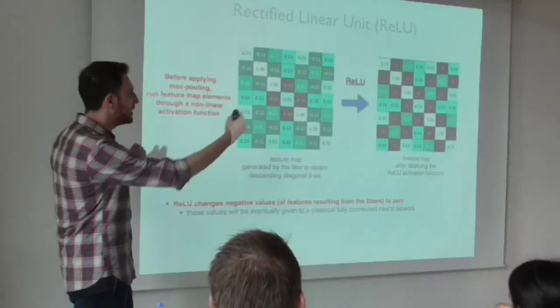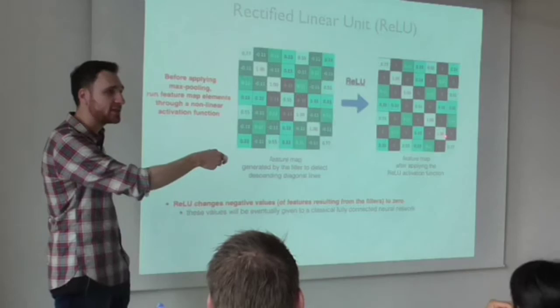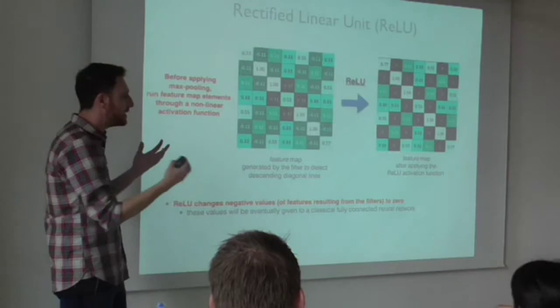These deltas are computed from the end of the network back to the first layer. You compute the deltas at the last layer, then the deltas at the layer before that, and so on.